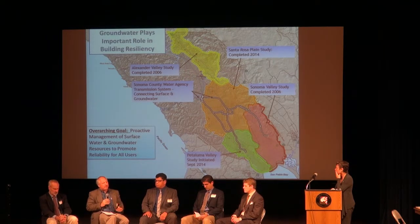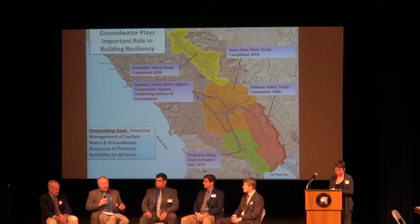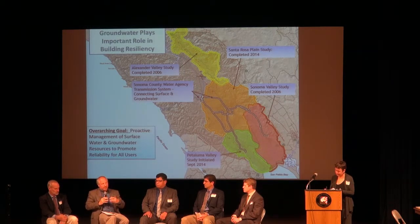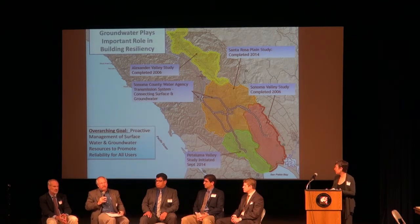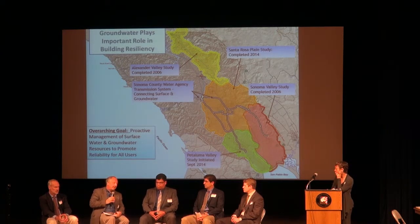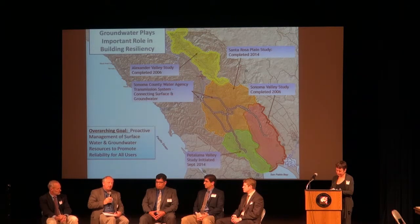In addition to the funding benefits, especially in the North Coast, there have been some relationships built. This is an area where water diversions from the Eel River system to the Russian River system are very controversial and have divided that whole region. But the integrated plan has really brought water managers, counties, and local politicians together to regularly meet and understand each other. So in addition to the funding, we're seeing some real benefits from that program.